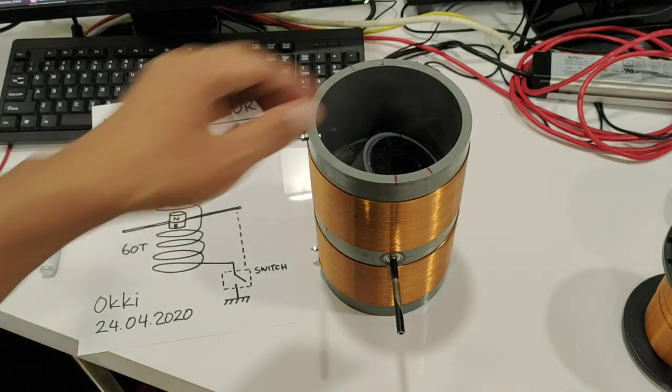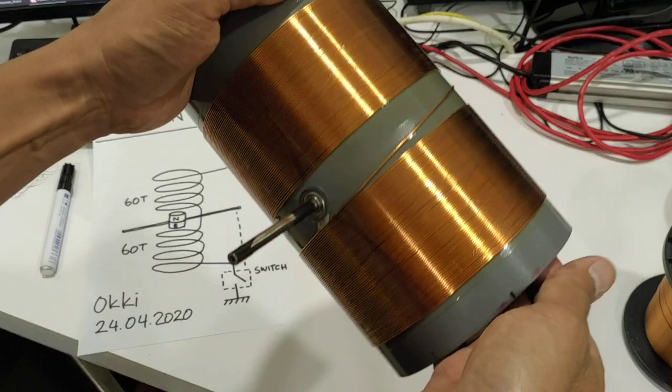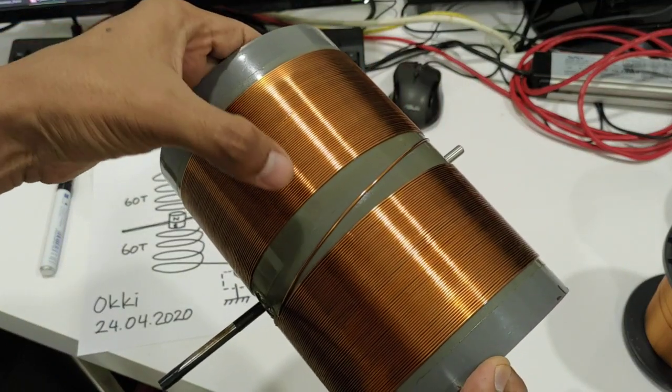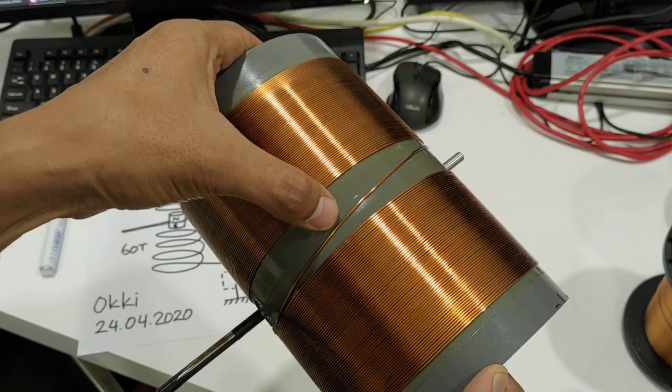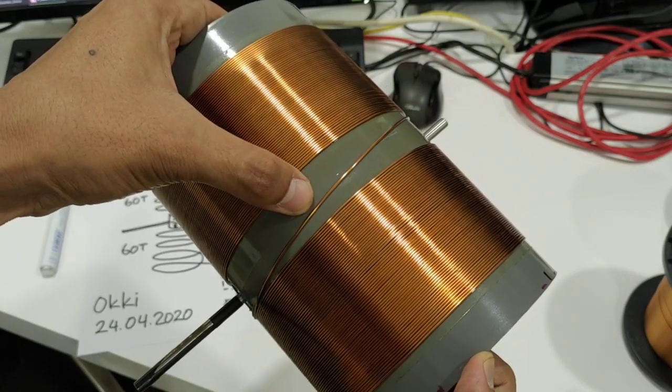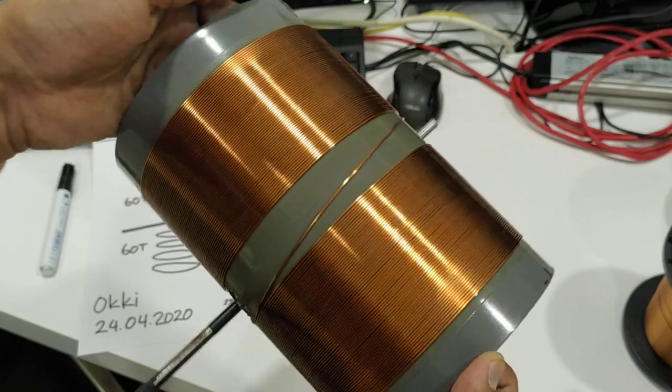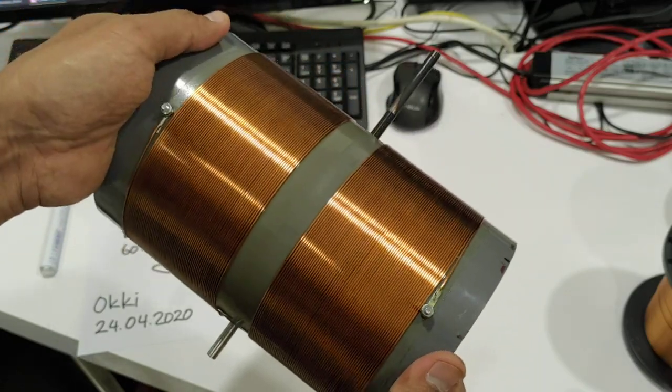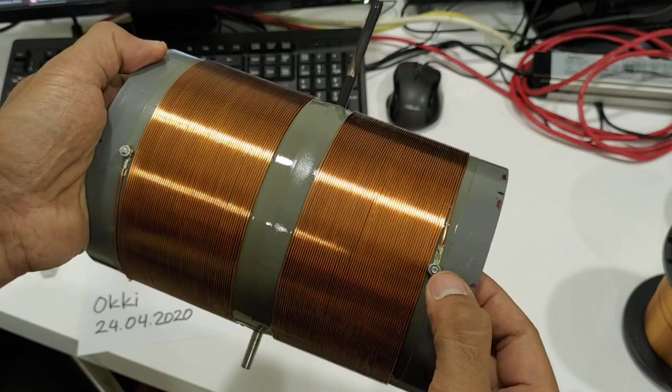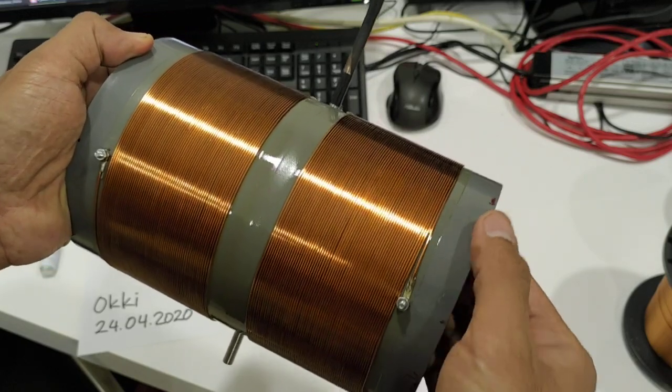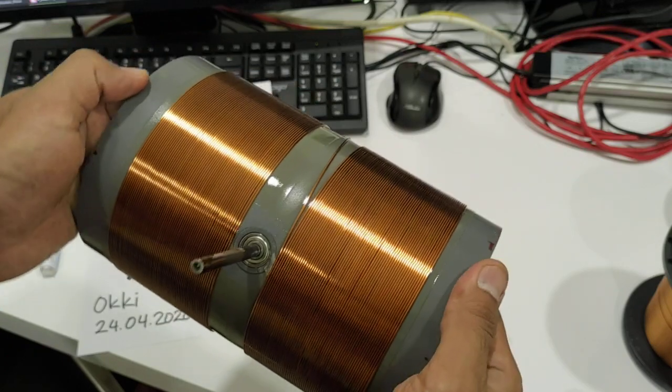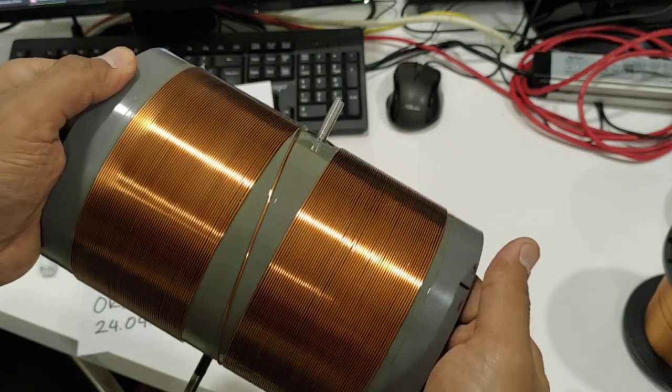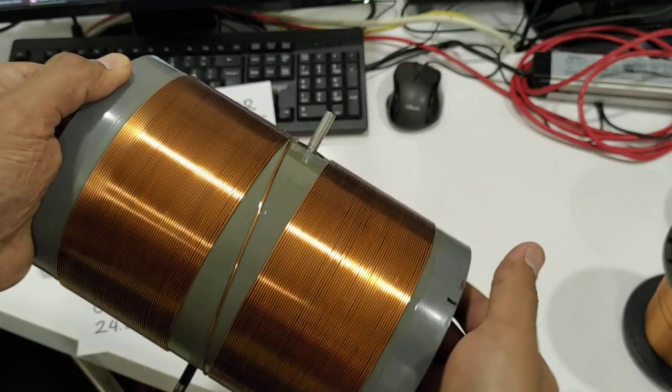For the coil I use 1 millimeter diameter magnet wire. This is the connection I made. This is actually one coil.